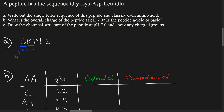For lysine, we have an amino group on the R group — a four-carbon chain with an amino group — and so that makes it basic. For aspartic acid and glutamic acid, from the name you can tell they're acidic because they have a carboxyl group on the R group. And for leucine, it has a non-polar R group — a four-carbon chain — so it's non-polar. We've now classified all the amino acids.